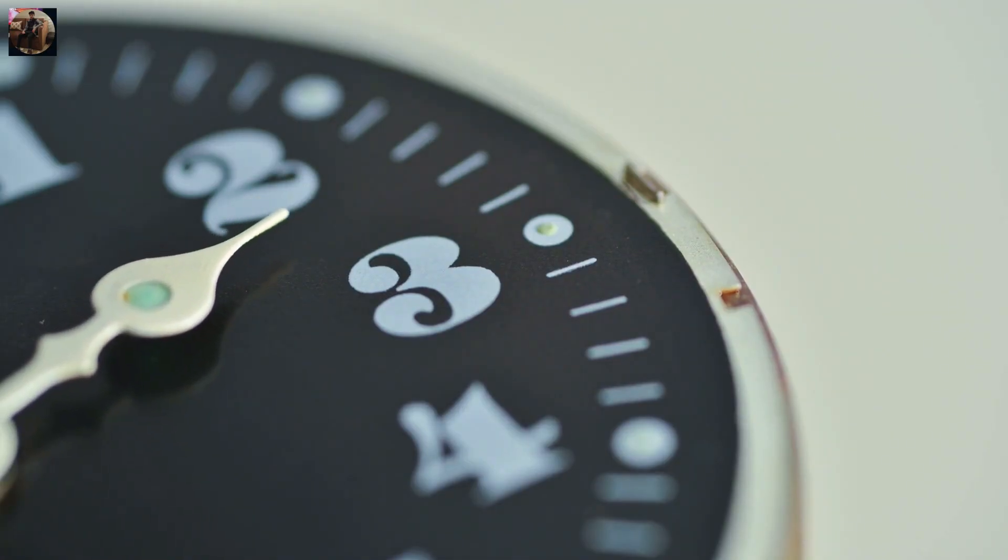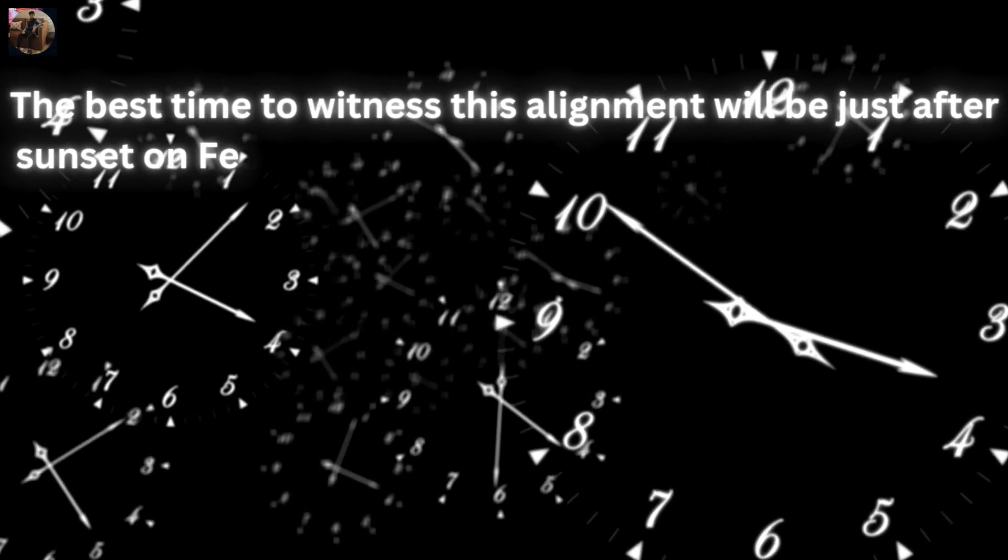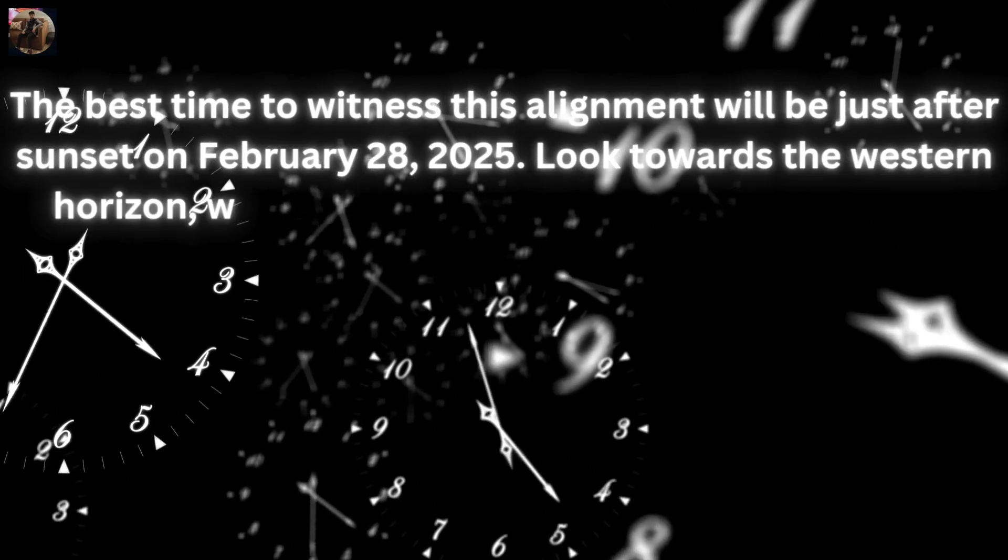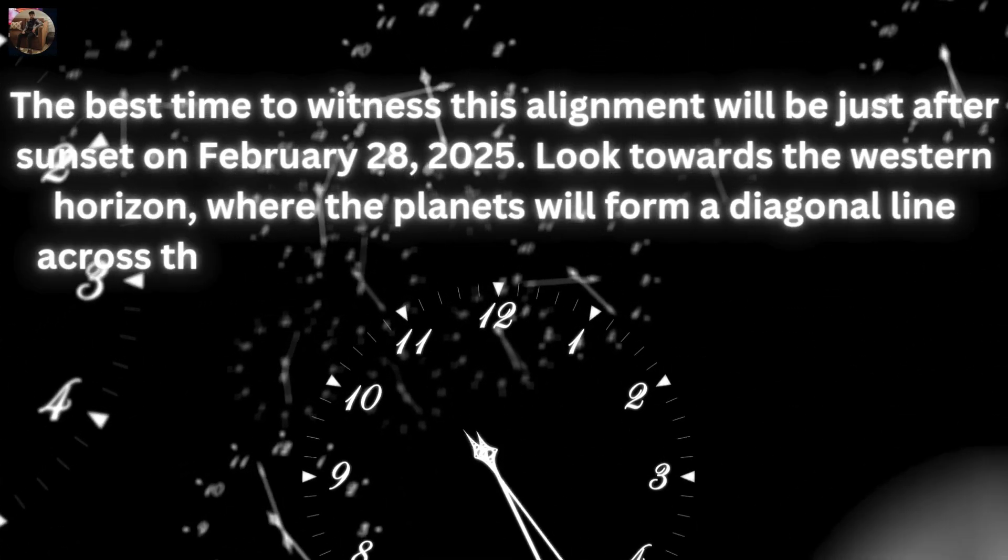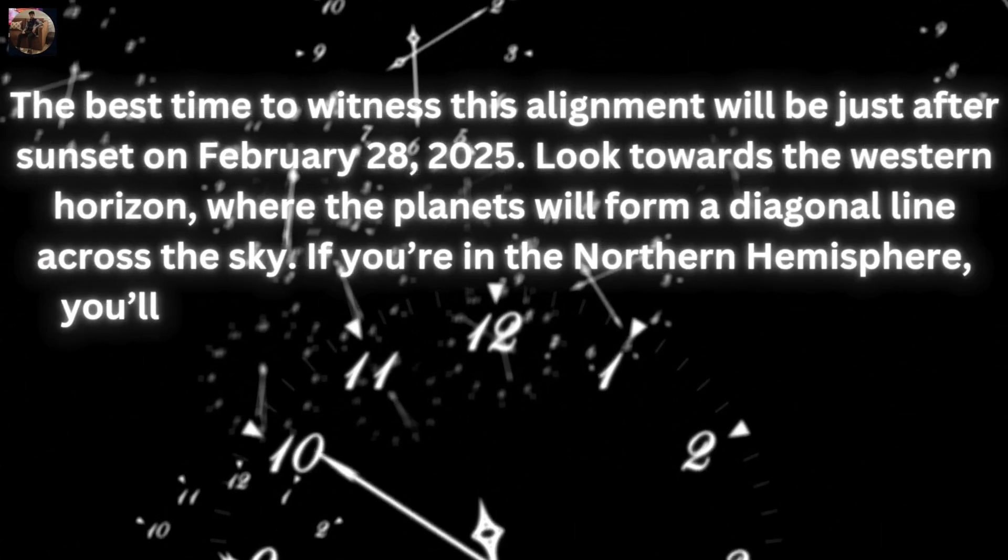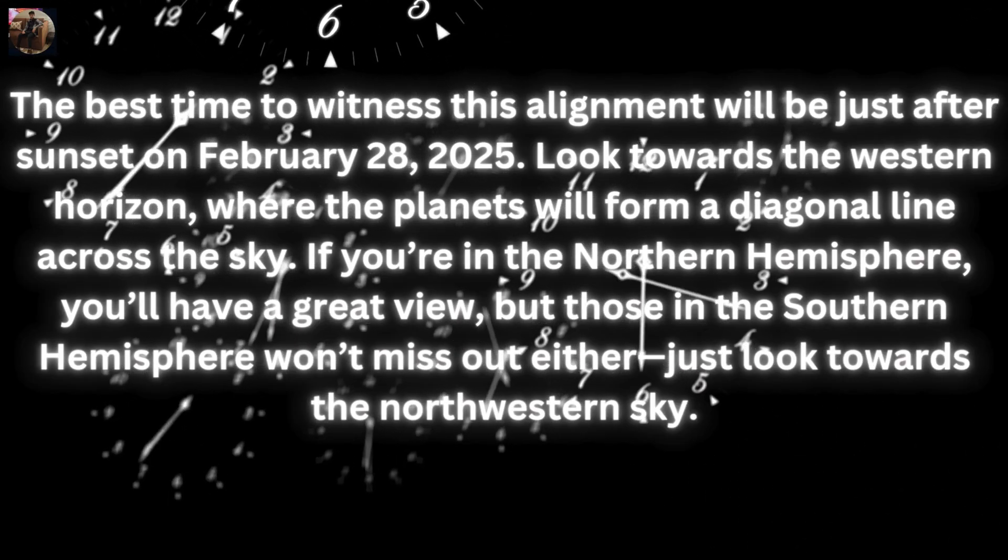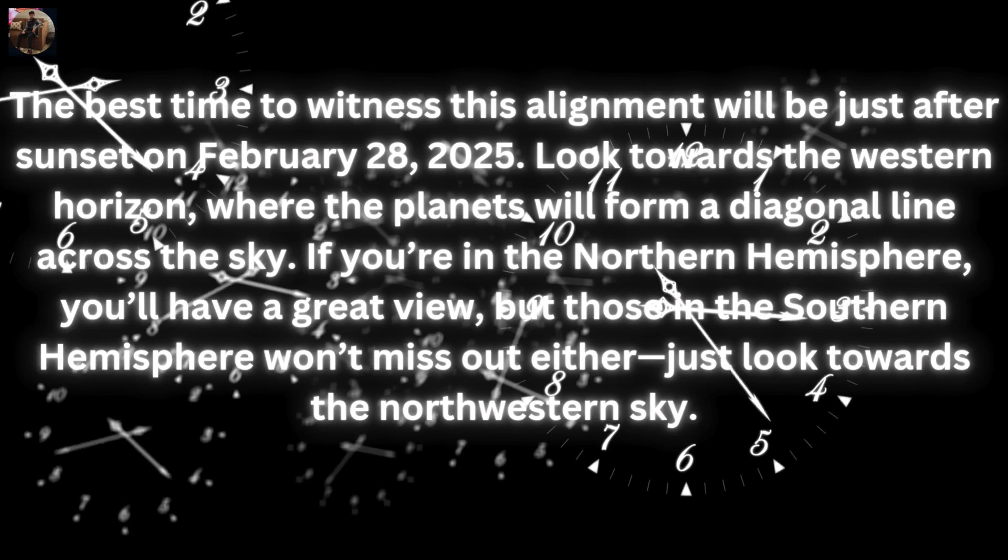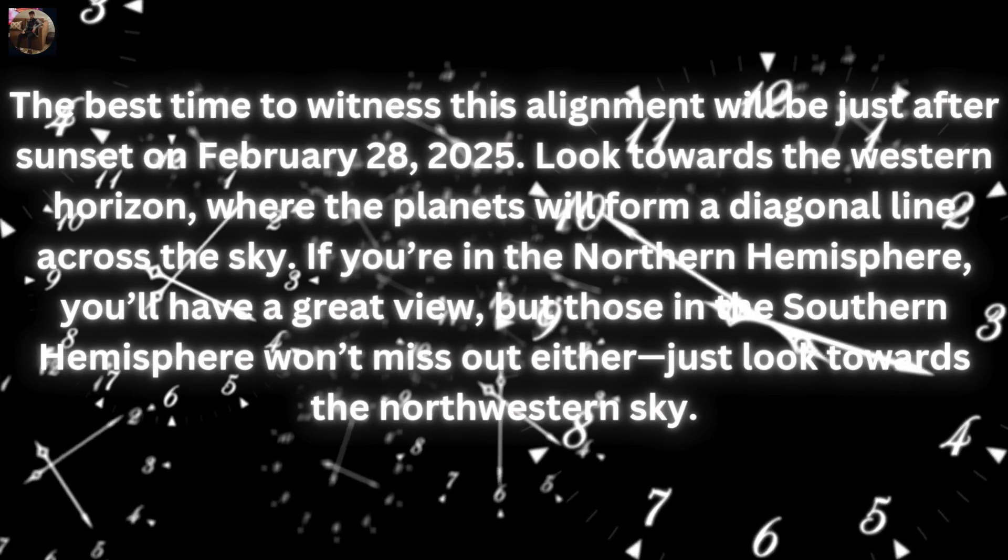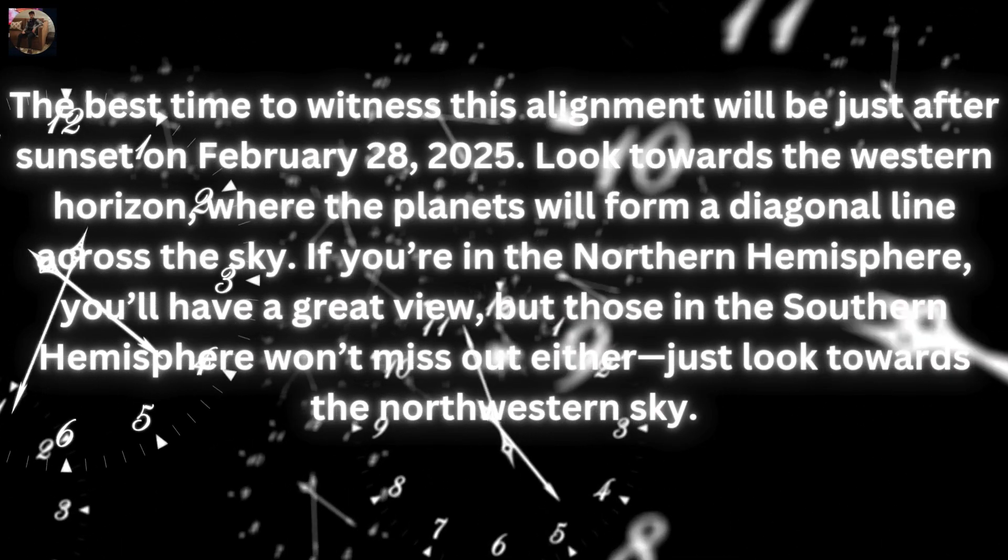Now let's talk about the timing. The best time to witness this alignment will be just after sunset on February 28, 2025. Look towards the western horizon where the planets will form a diagonal line across the sky. If you are in the Northern Hemisphere, you will have a great view, but those in the Southern Hemisphere won't miss out either—just look towards the northwestern sky.